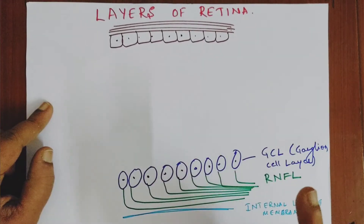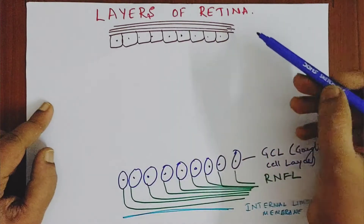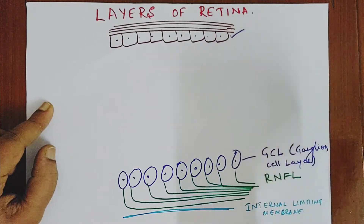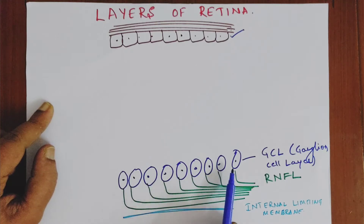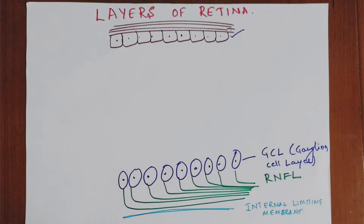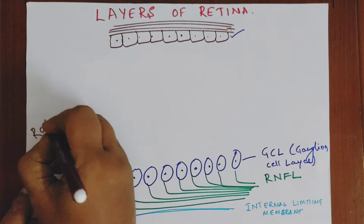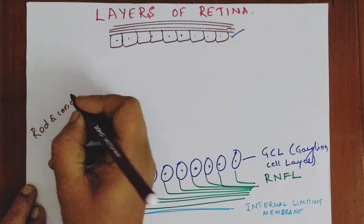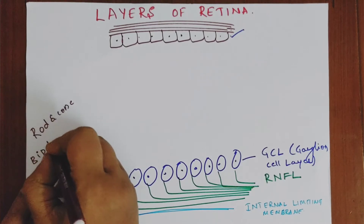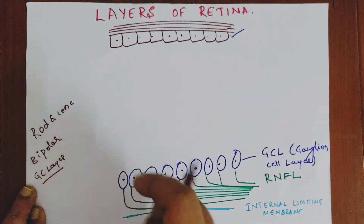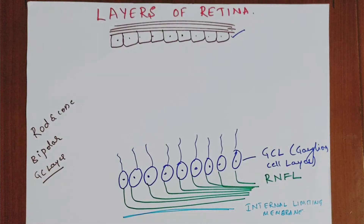Remember what we have so far. From outside to inside: retinal pigment epithelium adjacent to the choroid, then from the inside we have the internal limiting membrane, followed by the retinal nerve fiber layer and the ganglion cell layer. Now, there are three major cell types in the retina: first, rods and cones; second, bipolar cells; and third, ganglion cells — which we have already represented.